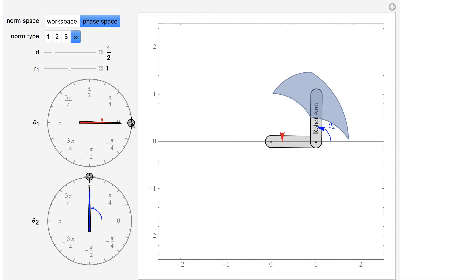This demonstration has a two-link robot. The blue area shows all the points that are within ½ unit distance of the tip of the robot.